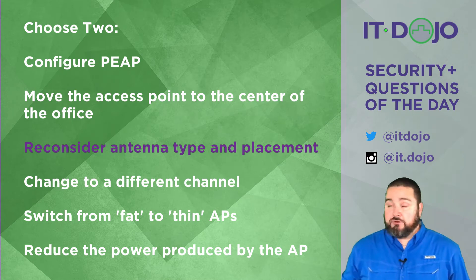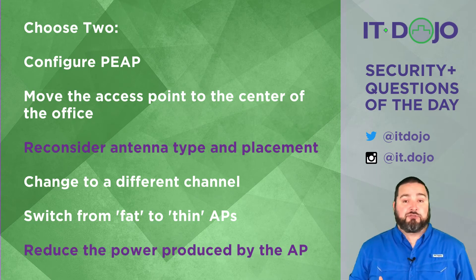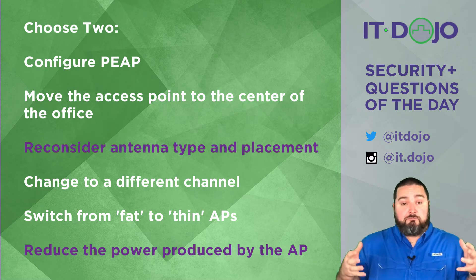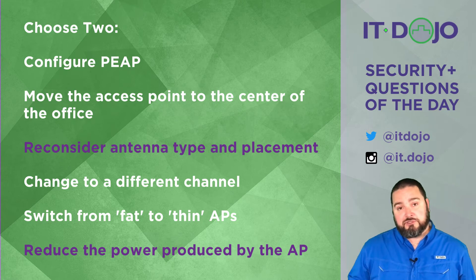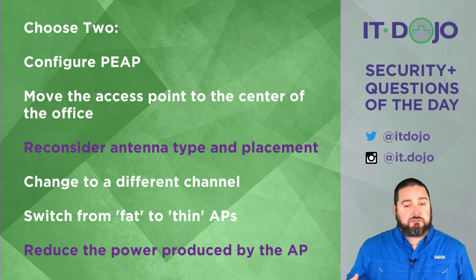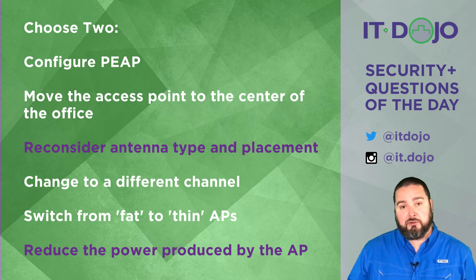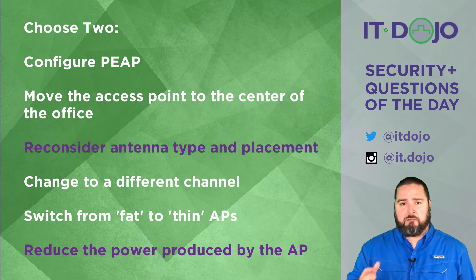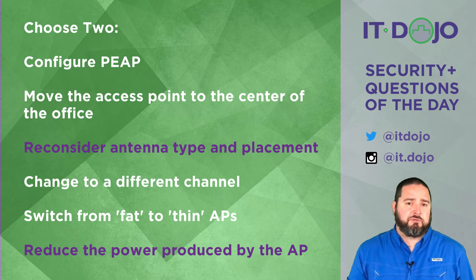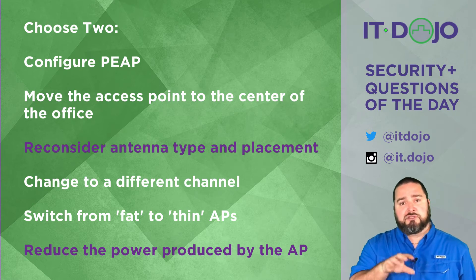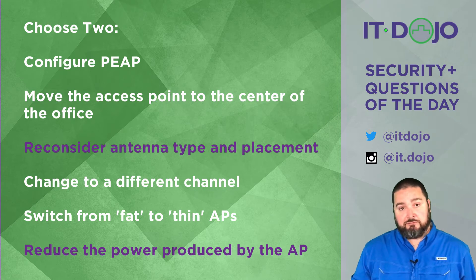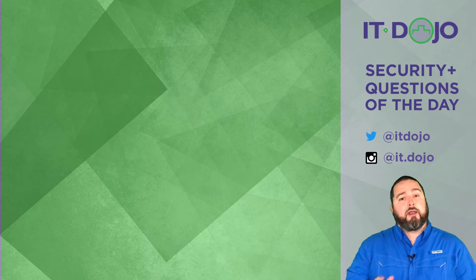The last answer choice — and one of the correct answers — is to reduce the power being produced by your access point. The two biggest factors controlling your propagation pattern are: how much power your access point is producing, and the type and orientation of the antennas connected to it. Newer technologies get into beamforming and varying transmit power based on spatial streams, but the core concept is that antenna choice, antenna placement, and access point transmit power are the two biggest factors in appropriately sizing your RF cell.